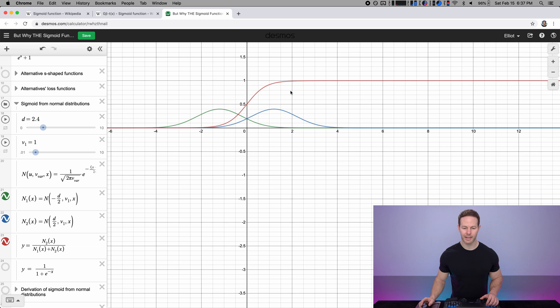So we can look at how it transforms as we move the means of the distributions farther and closer together. And if we change the variance, it has a similar squashing effect. But nonetheless, it's still the shape of a sigmoid function.